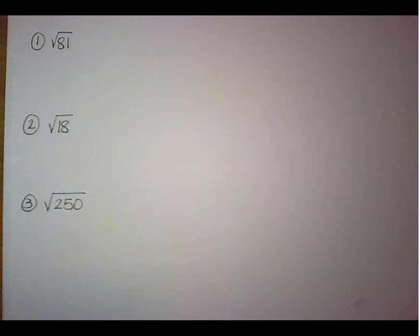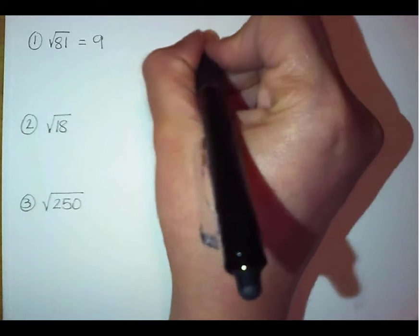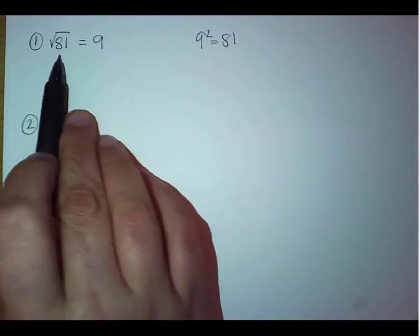So hopefully you look at the square root of 81 and realize that that is a perfect square. It is the number 9. Again, if I looked at 9 squared, I would get 81. That is why the square root of 81 is 9.